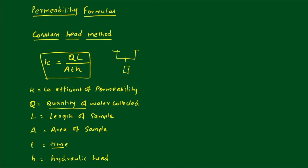The next method is the falling head method. In the falling head method, in the laboratory, we use a stand pipe. There are three types of tubes: the first type is a bigger tube used as a stand pipe, then a smaller tube used for soil, and a very small tube used for clay soil.